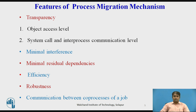A good process migration mechanism must possess transparency, minimal interference, minimal residual dependencies, efficiency, robustness, and communication between co-processes. First, transparency — transparency is an important requirement for a system that supports process migration.